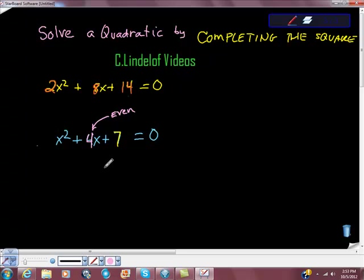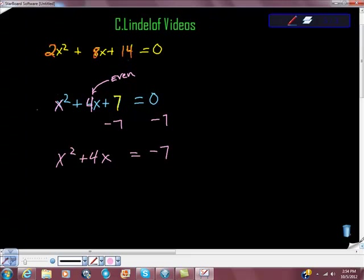Complete the square technique starts with moving over everything that's not hooked to a variable, so we have x² here, 4x here. 7 doesn't have a variable or x attached to it, so I'm just going to move it over like this. You don't have to do it this way, but I'm going to just follow kind of the standard procedure for this.